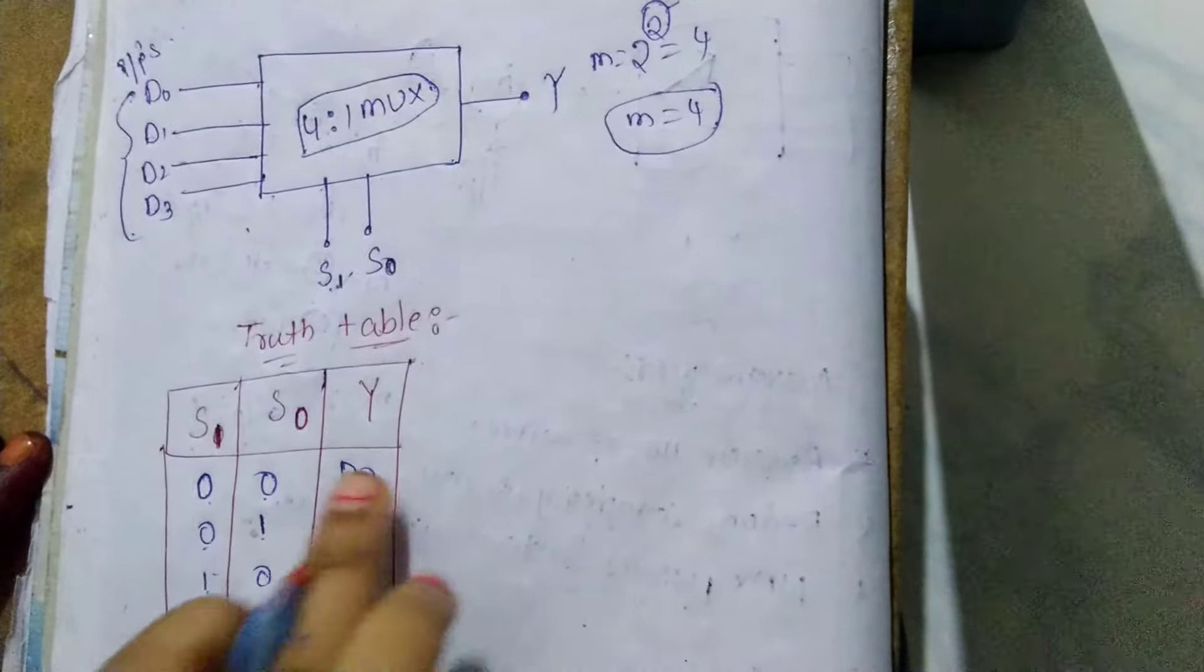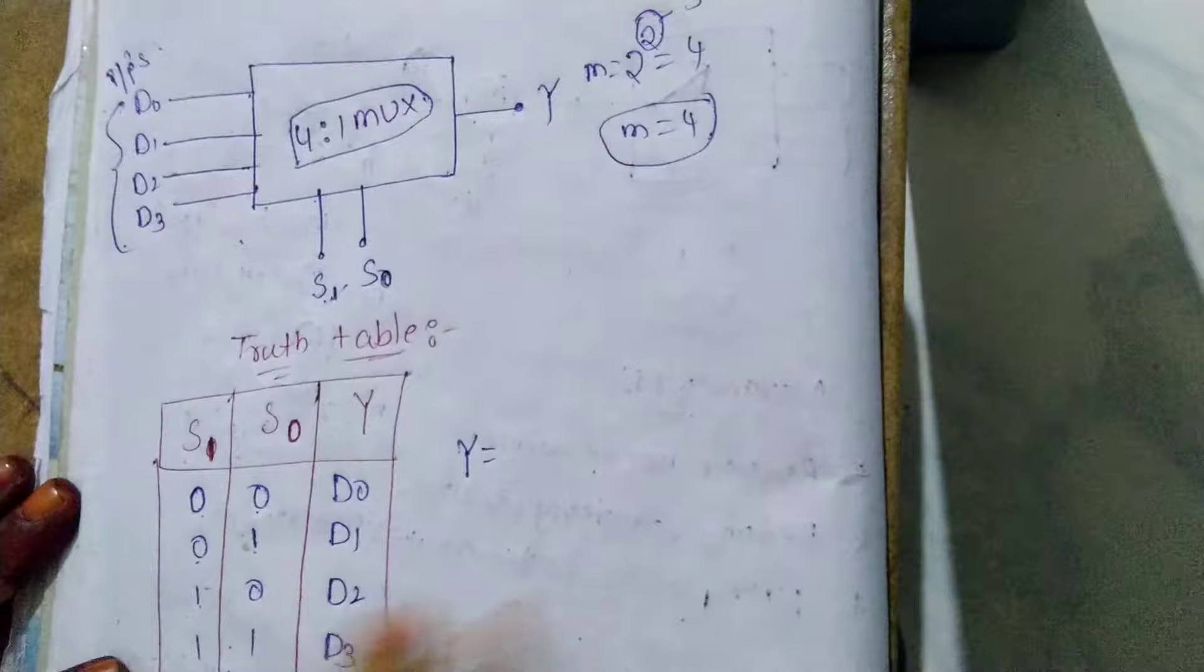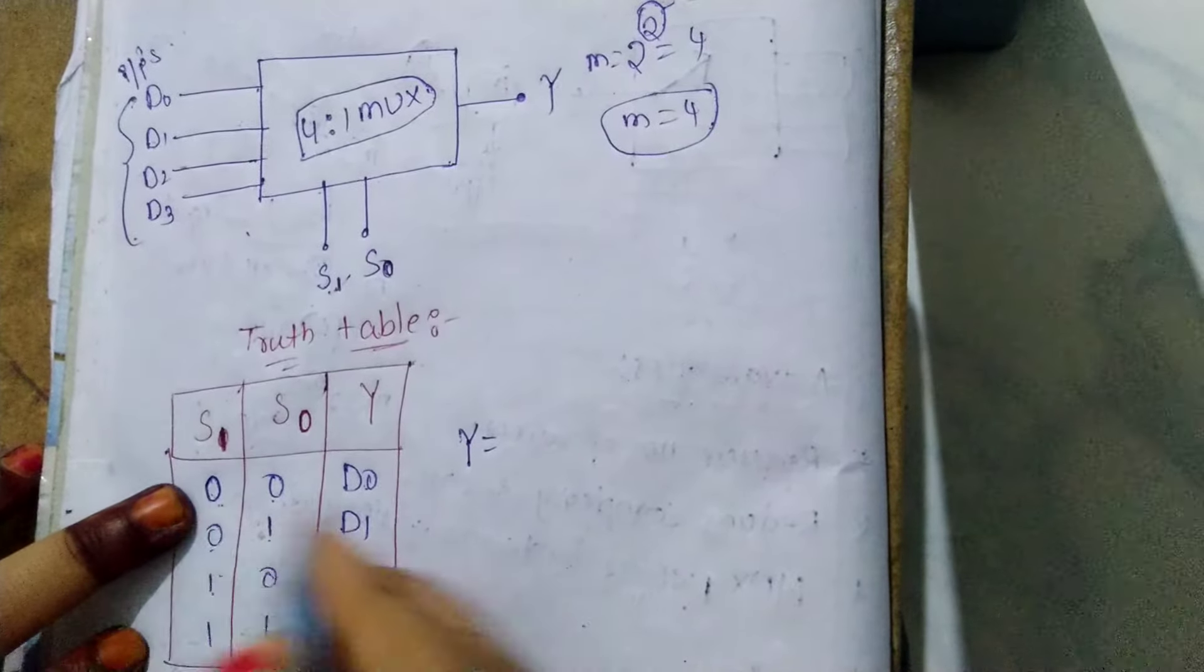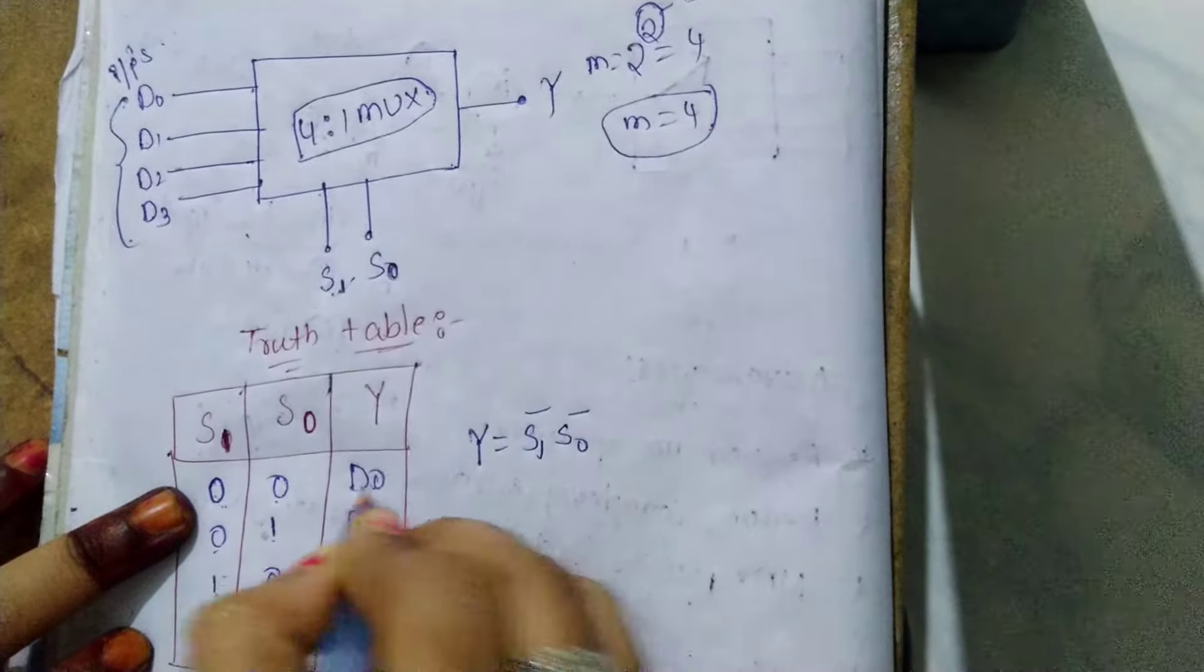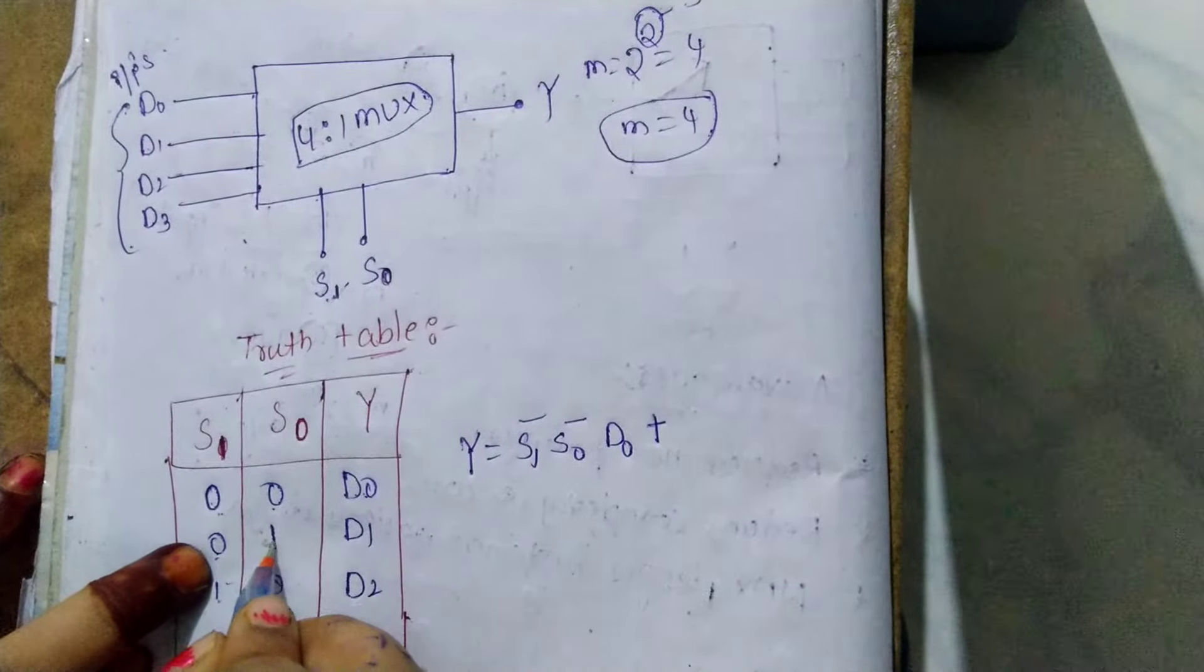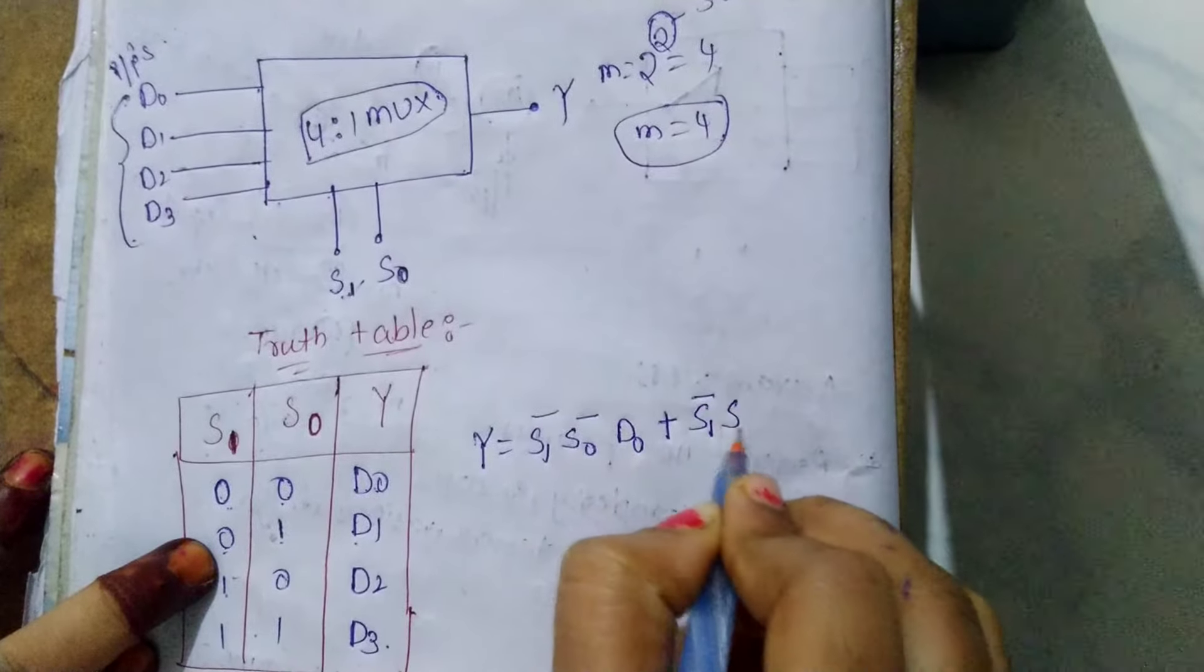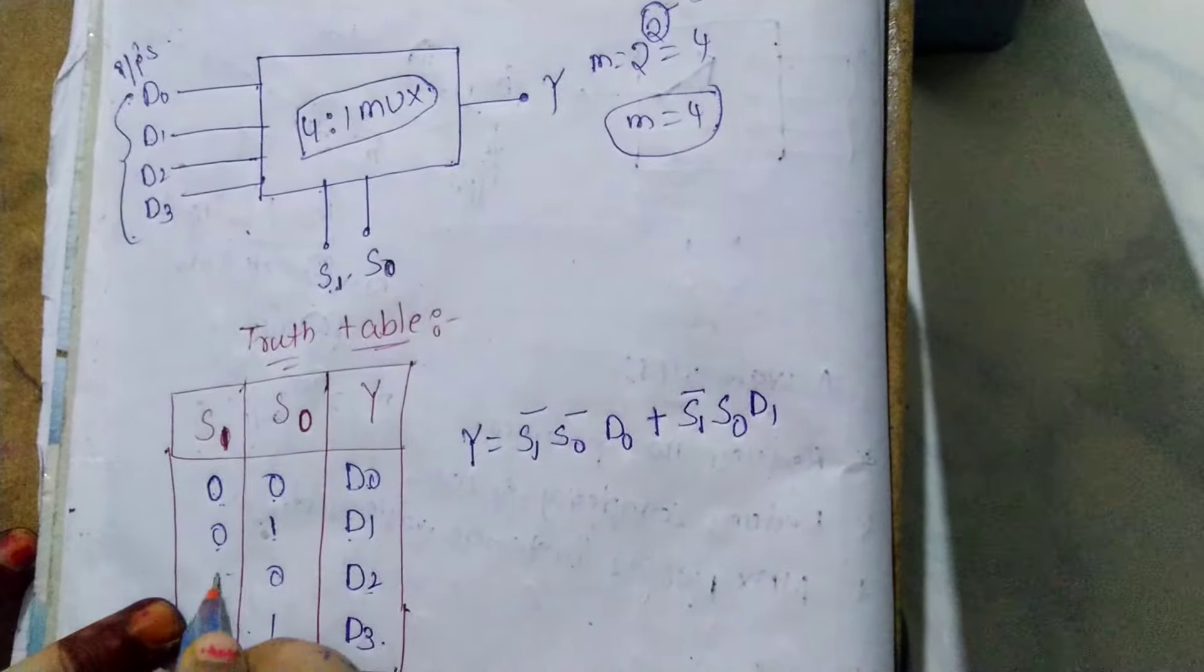Now I will find out the total Y expression. Y equals first D0: S1 complement S0 complement D0, plus next S1 complement S0 D1, plus D2: S1 S0 complement D2.